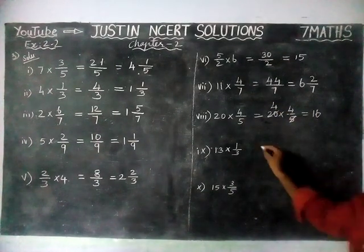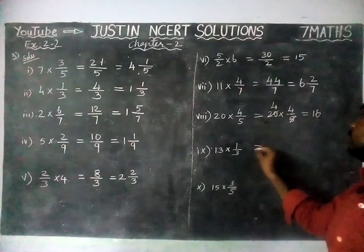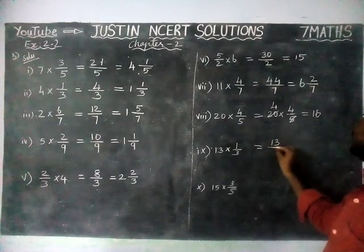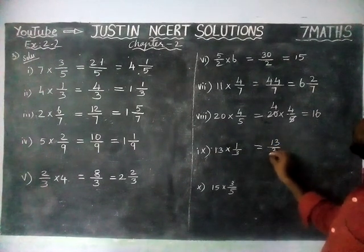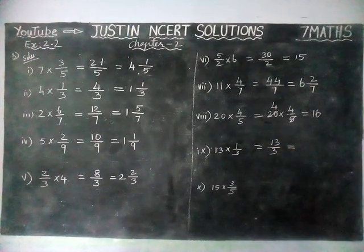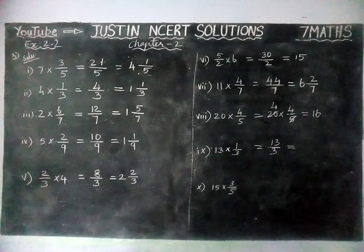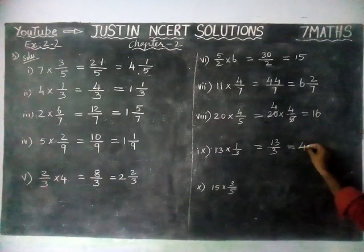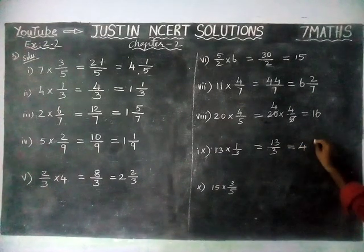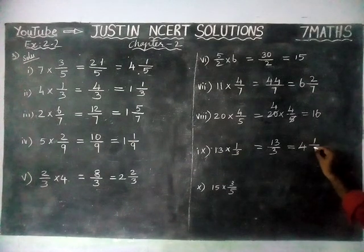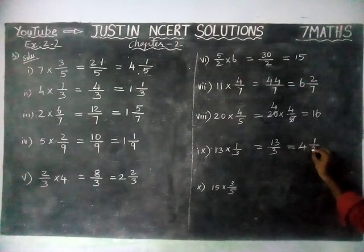Next, 9th question: 13 ones are 13, divided by 3. In 13, how many threes are there? 4 threes are 12, remaining 1. So the remainder 1 is written in the numerator and the denominator is 3. The answer is 4 and 1 by 3.